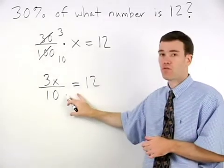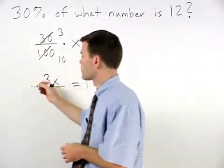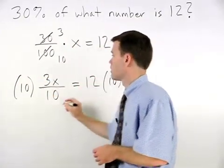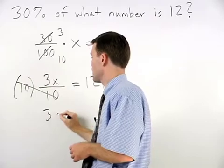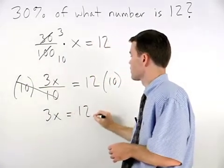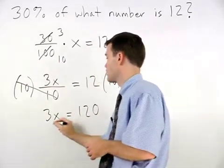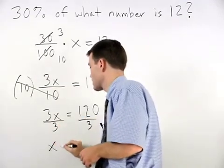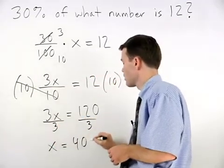To get rid of the fraction, we multiply both sides of the equation by 10. And we have 3x equals 120. Dividing both sides by 3, x equals 40.